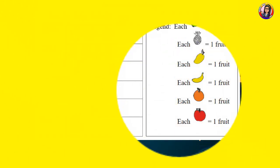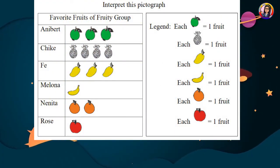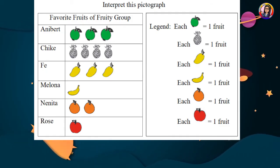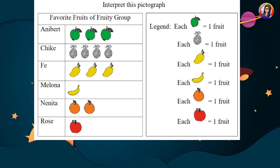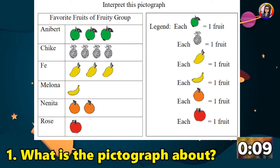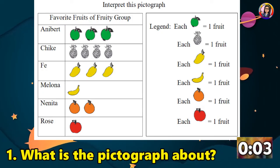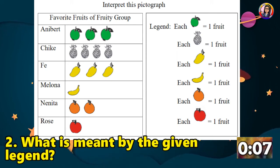Good job! Let us continue with another activity. Activity 2: Read and study, then interpret this pictograph. Based on your interpretation of the pictograph above, answer these questions. Use a separate sheet of paper for your answers.